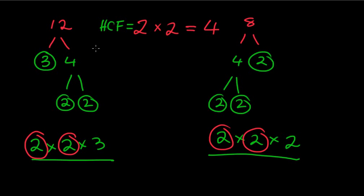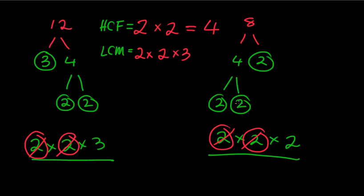Now for the lowest common multiple. An easy way is to start with whatever your highest common factor is — in this case 2 × 2. Then we look at whatever is left over and tack that on. We've got a × 3 left over and a × 2 left over. So: 2 × 2 = 4, × 3 = 12, × 2 = 24. That gives us 24 as our lowest common multiple, which again matches our earlier answer.